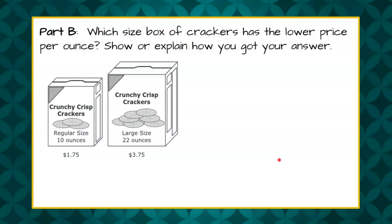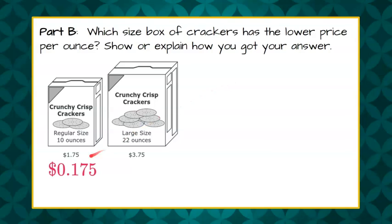Part B: which size box of crackers has the lower price per ounce? Show or explain how you got your answer. So now we know that we found the price per ounce for the regular size was $0.175 of a dollar, and now we're going to find how much per ounce the large Crunchy Crisp Crackers are.